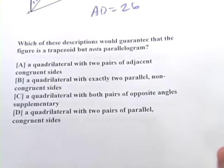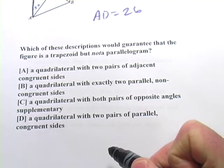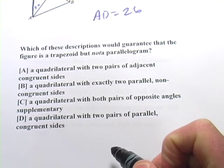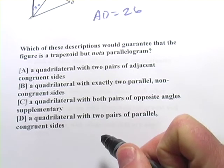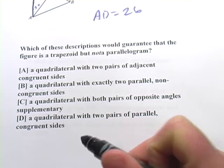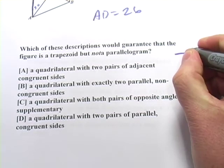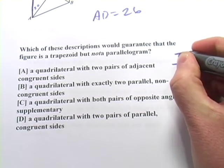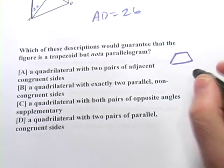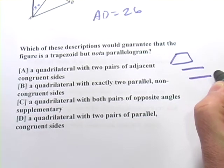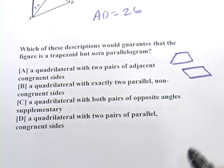These require some thinking about, with logic, about the characteristics of different quadrilaterals, and these can be a little tricky, so let's work through these. It says, which of these descriptions would guarantee that the figure is a trapezoid, but not a parallelogram? And remember, a trapezoid kind of looks like that, a short base and a long base and two sides. And a parallelogram is like that. Sides, the same length, both sets parallel to each other.